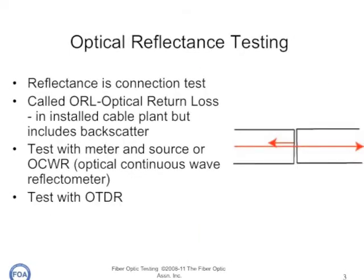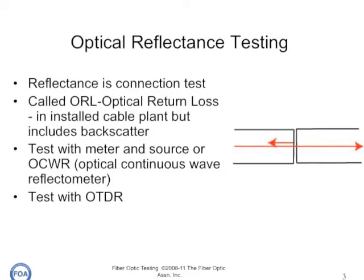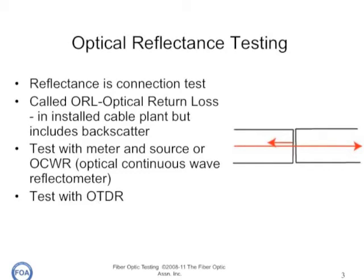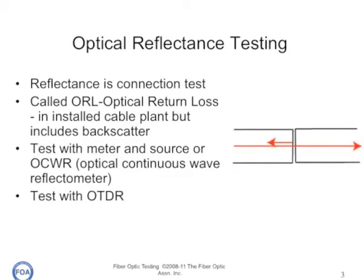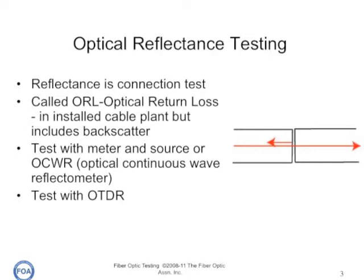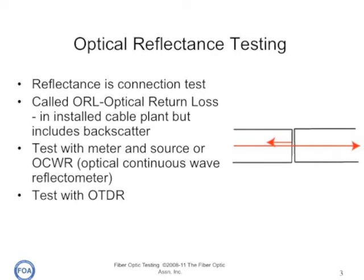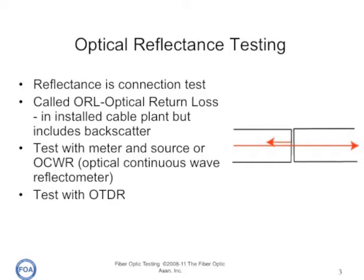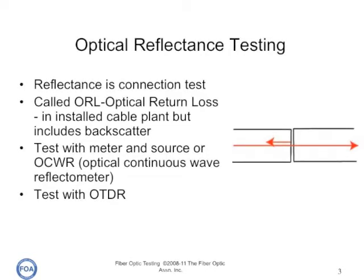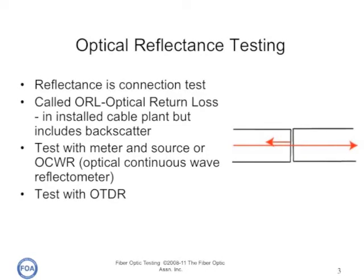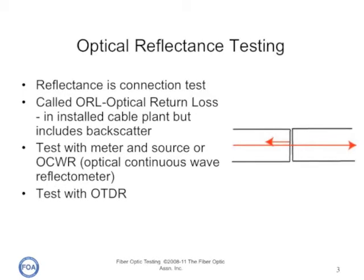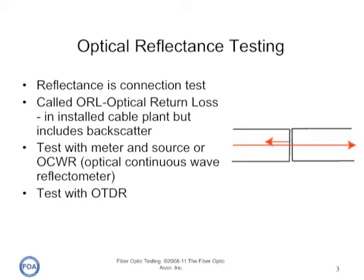The first test we'll talk about is reflectance testing. Reflectance is basically a connection test between two fibers, usually a connector, although occasionally a splice. It's sometimes also called optical return loss, but optical return loss also occasionally refers to a test of an installed cable plant that includes the backscatter from all the fiber.